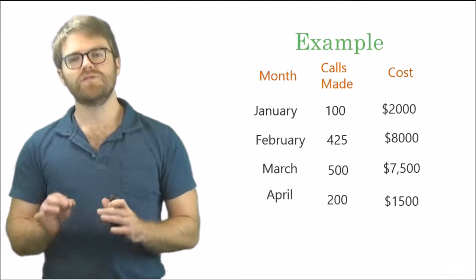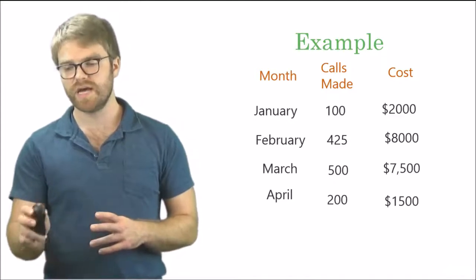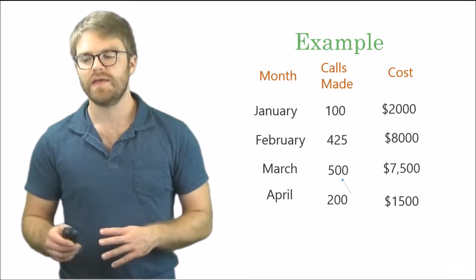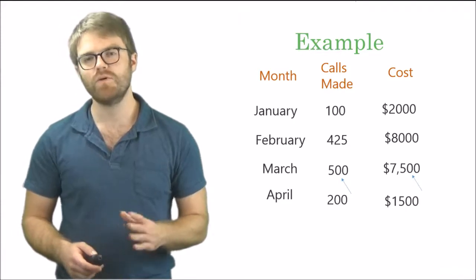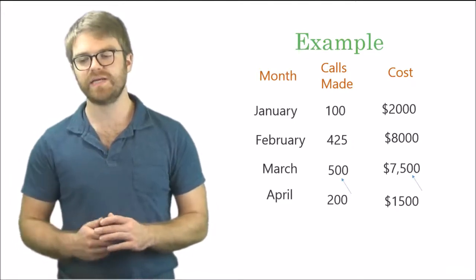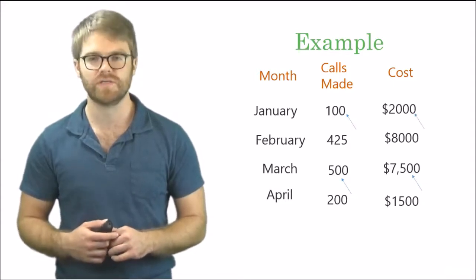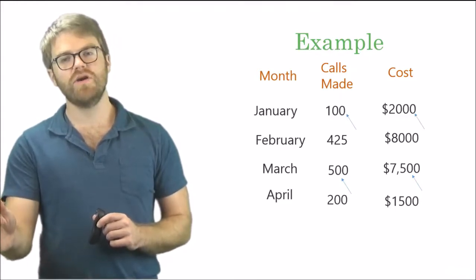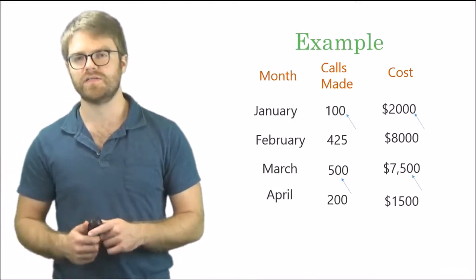The first step is to find the highest activity. Calls made is your activity, so what's the highest? March has 500 calls, and the cost associated is $7,500. Now for the lowest — don't look at costs first, look at the activity. The lowest activity is January with 100 calls, so $2,000 was the cost. Notice April has lower costs, but that doesn't matter — you look for the activity first, then the cost.